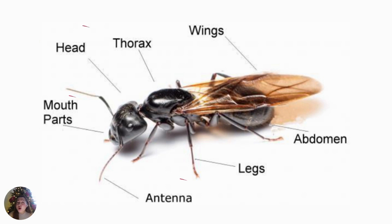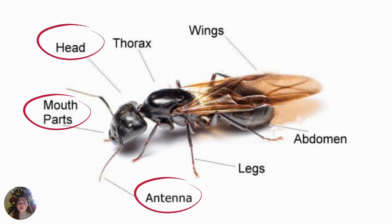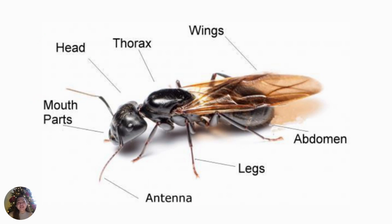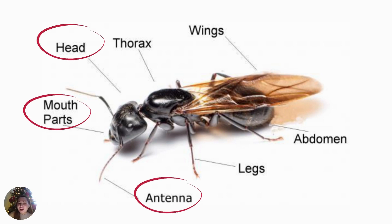So, what is the body part that is used for feeling, hearing, smelling, and tasting of an insect? Good job! It is the antennae.